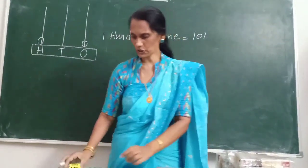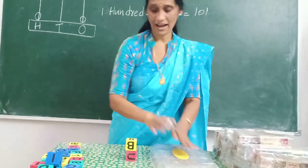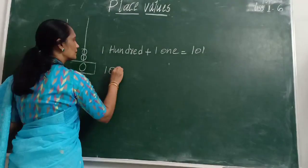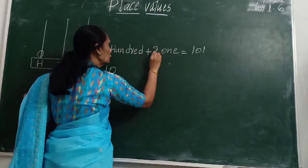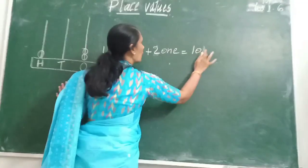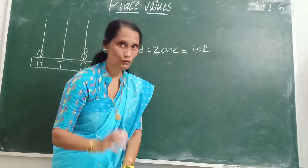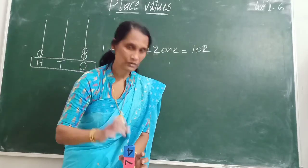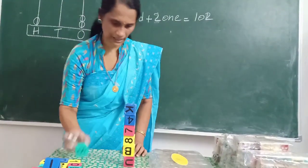If it is 2 blocks, 100 and 2. 2 blocks means 100 and 2 ones. It will become 102. If it is 3 blocks, 103. If it is 4 blocks, 104.